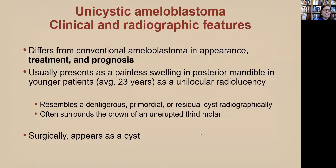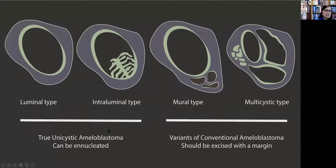The distinction of unicystic ameloblastoma is important because it differs from conventional ameloblastoma in both treatment and prognosis. These patients are younger by about a decade. Clinically this can resemble a dentigerous cyst, primordial cyst, or residual cyst, but these are radiographically unilocular — not multilocular. They often surround the crown of an unerupted third molar, with subtle radiographic differences. To the surgeon, this is a cyst.